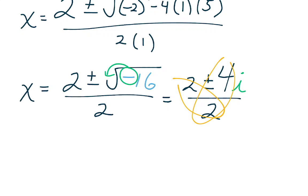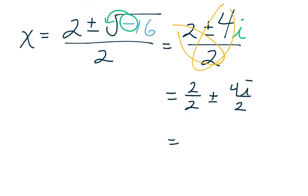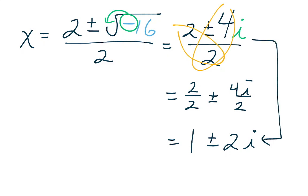Should I simplify this? Every one of these numbers can be divided by 2. So 2 over 2 plus or minus 4i over 2 gives 1 plus or minus 2i. You can skip straight to that answer if you'd like.